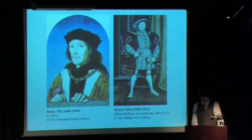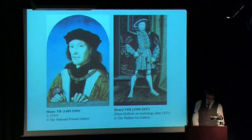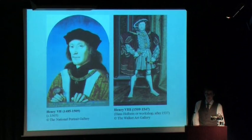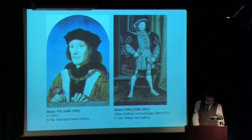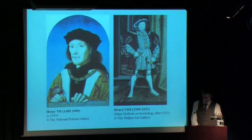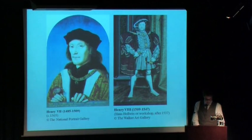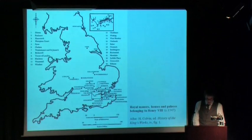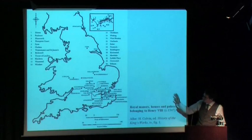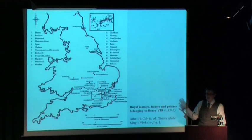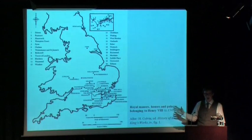Following a generation of civil war, Henry VII and his son Henry VIII sought first to re-establish royal power within England, and second to increase England's political and cultural standing relative to its neighbours, in particular France and the Holy Roman Empire. The building and rebuilding of royal houses and palaces contributed to both endeavours. Henry VII acquired approximately 15 royal houses and added another five over his reign. Henry VIII, who succeeded his father in 1509, dramatically increased the royal estate to approximately 70 houses and palaces by his own death in 1547 — the largest architectural estate maintained by any English king before or since.